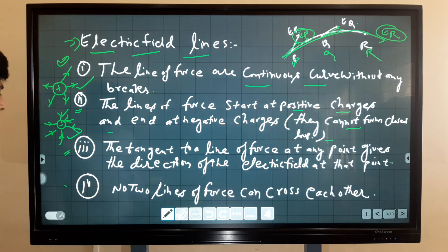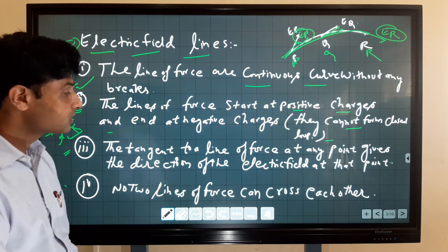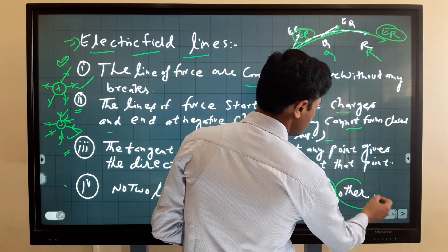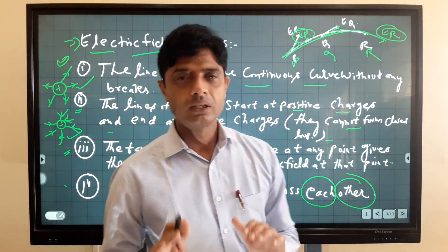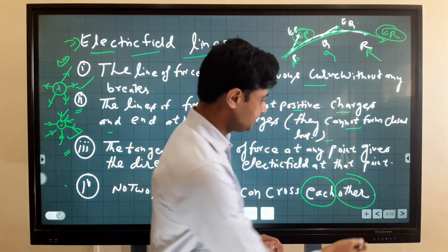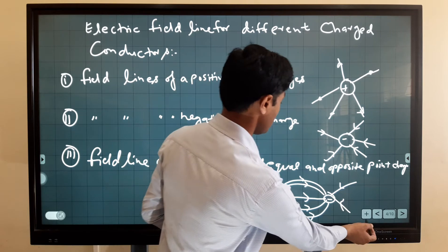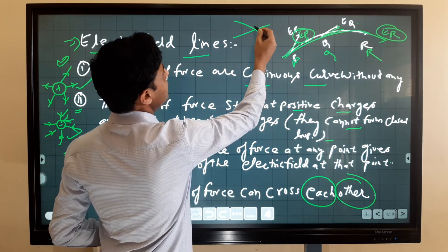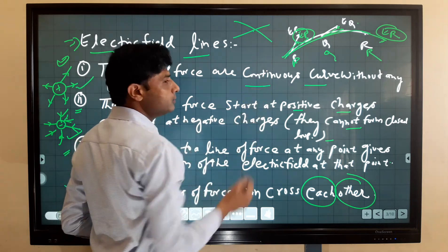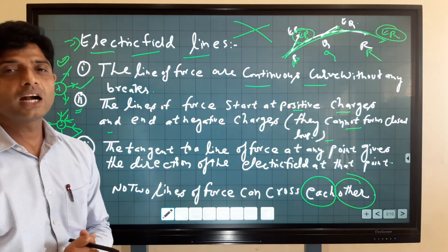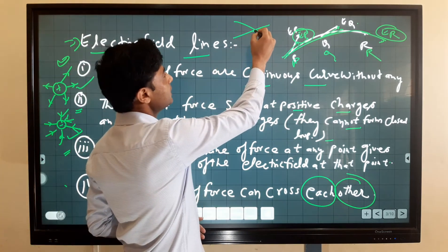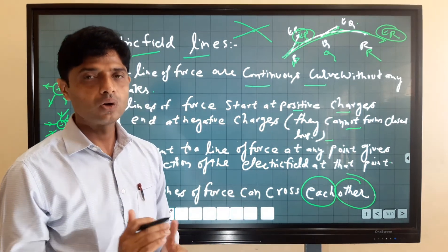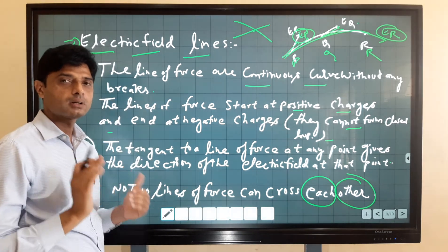The fourth property is that no two lines of force can cross each other. Two electric field lines never cross because if two field lines crossed, it would imply two possible directions of electric field at that point, which is impossible. At any particular point, there is only one direction of electric field, so electric field lines never cross each other.